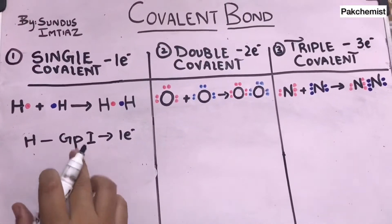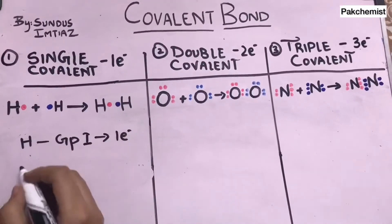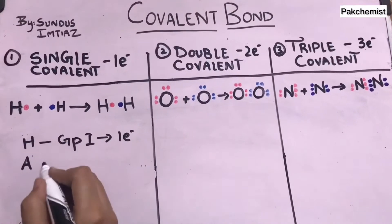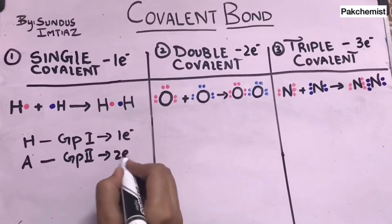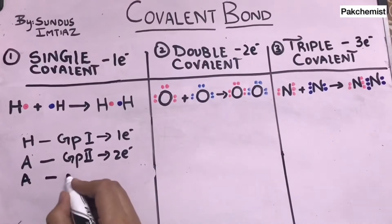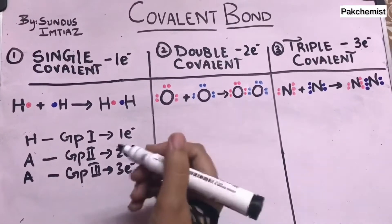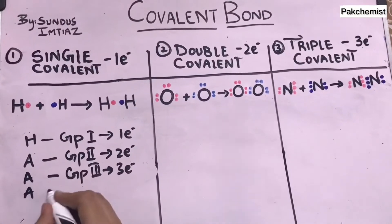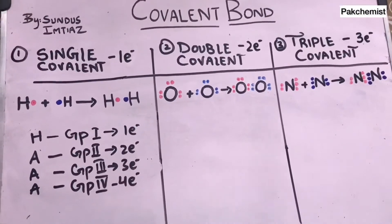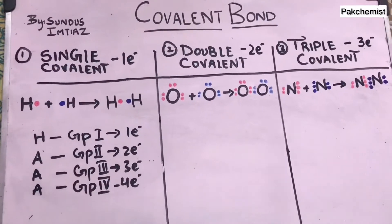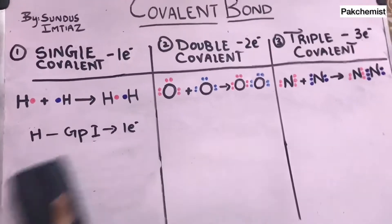If an atom belongs to group number one it has one electron in its outermost shell. Group two means two electrons, group three means three electrons, and group four means four electrons in the outermost shell. So hydrogen, belonging to group number one, has one electron in its outermost shell.